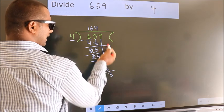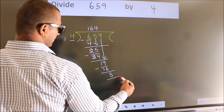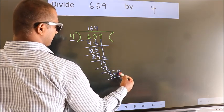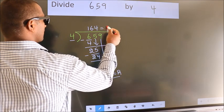No more numbers to bring it down. So we stop here. This is our remainder. This is our quotient.